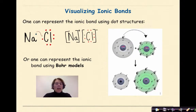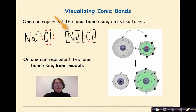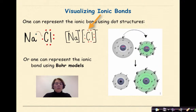Now let's talk about how we can visualize ionic bonds. One can represent the ionic bond using dot structures. Here I have the Lewis dot diagram of sodium with its one valence electron giving it to the chlorine atom. When the sodium atom loses its one valence electron, it becomes a sodium ion with brackets and a plus-one charge. Notice there are no other dots around this symbol — that's because in Lewis dot diagrams, we only represent the valence electrons involved in bonding. On the flip side, here we have the symbol for chlorine with its eight valence electrons and a charge of minus one. This shows that electrostatic force of attraction between the sodium ion and the chloride ion.